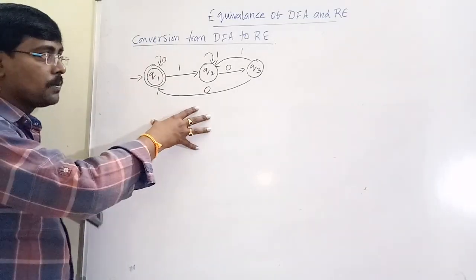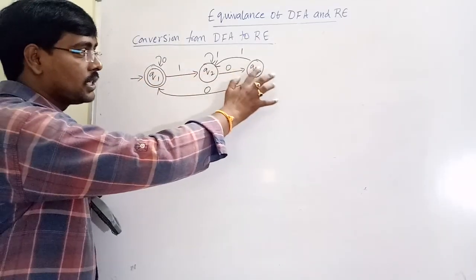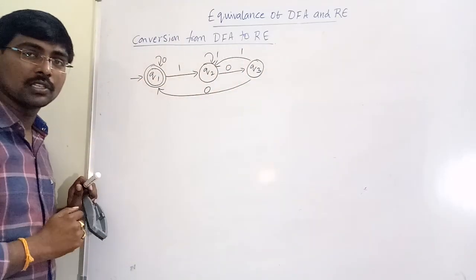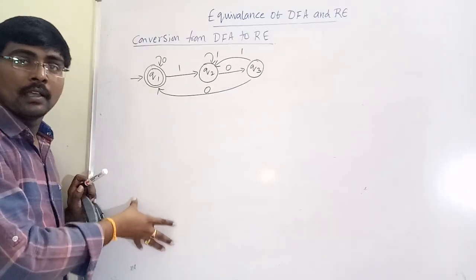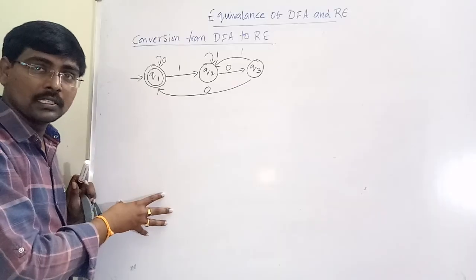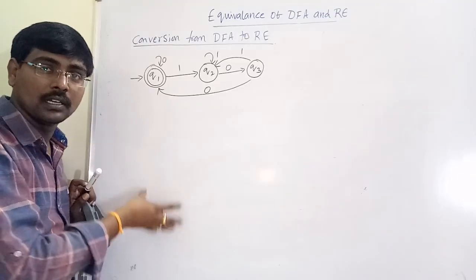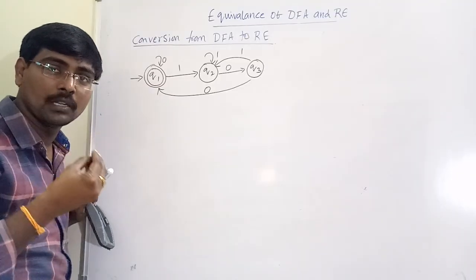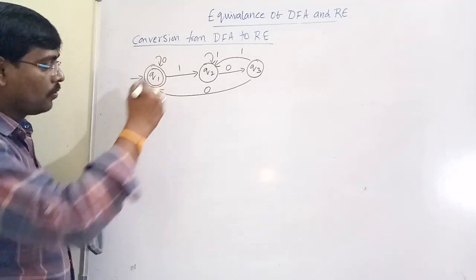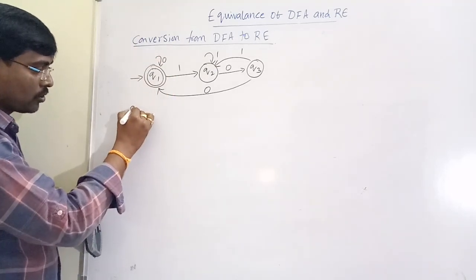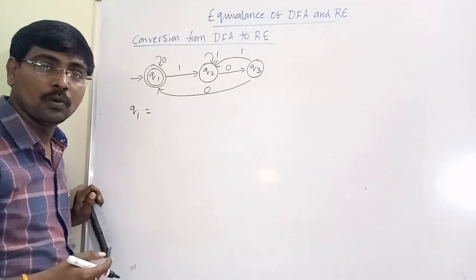So what is the procedure? The first step is to write down the equations for each state. Then simplify those equations, and the answer present in the final state — the equation present in the final state — is our final answer. Now write down the equations. First, Q1: what is the equation of Q1?